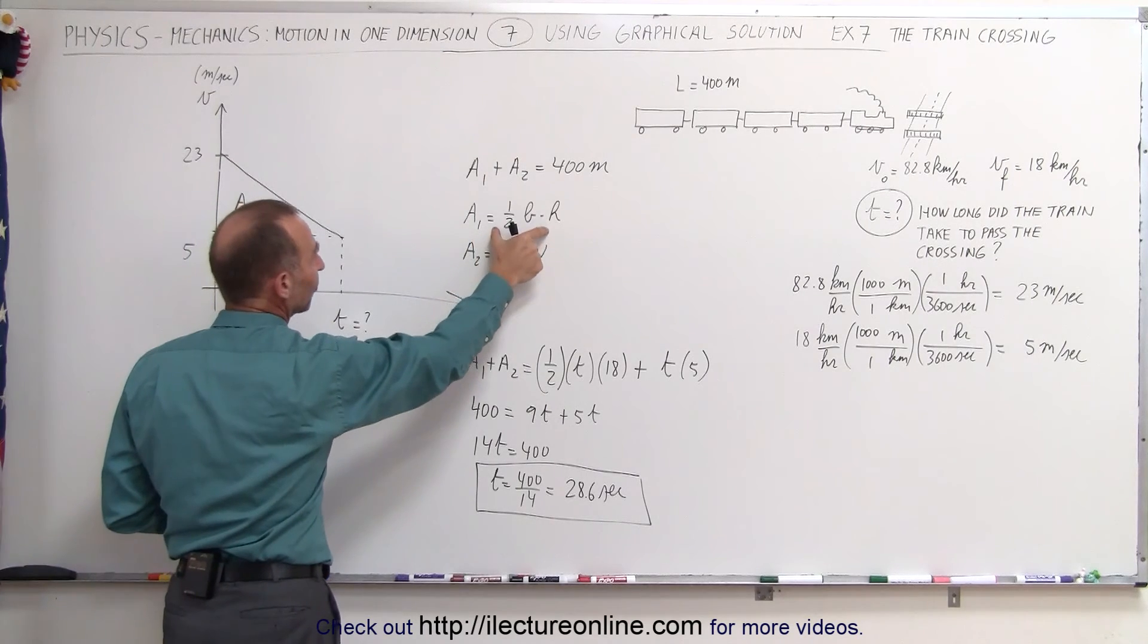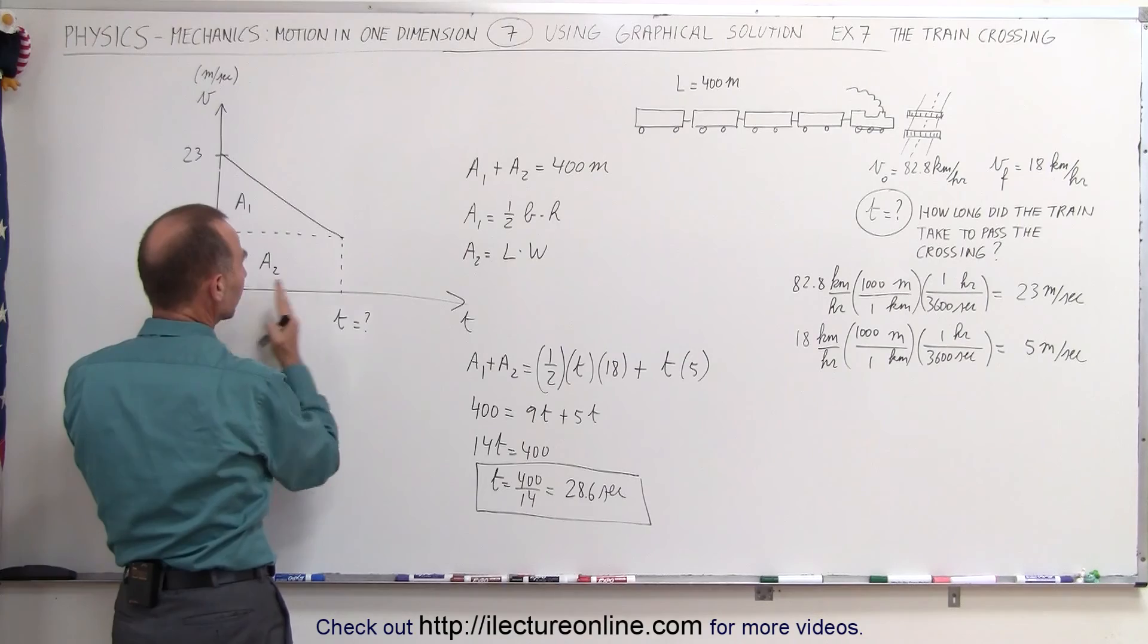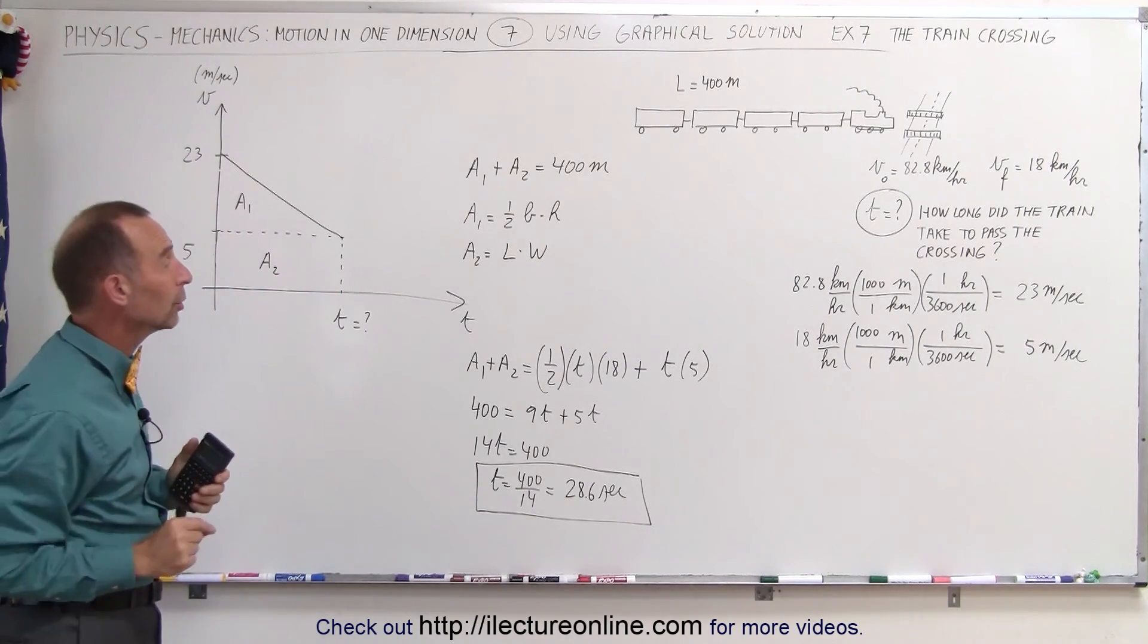The triangle is one half of the base times the height. Remember that the base, which is also the length of the triangle, is equal to the time that it takes, that's the only thing we don't know here.